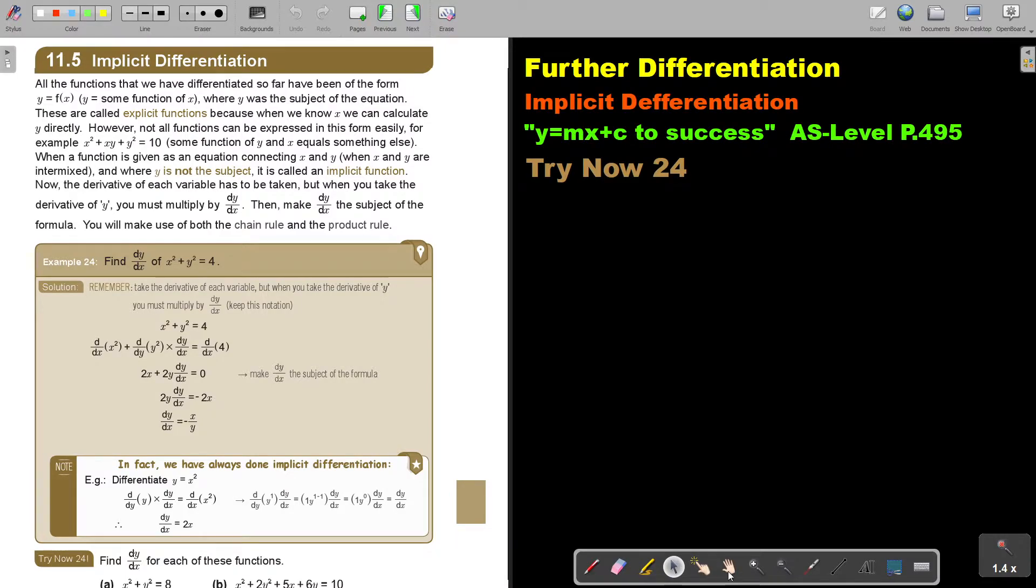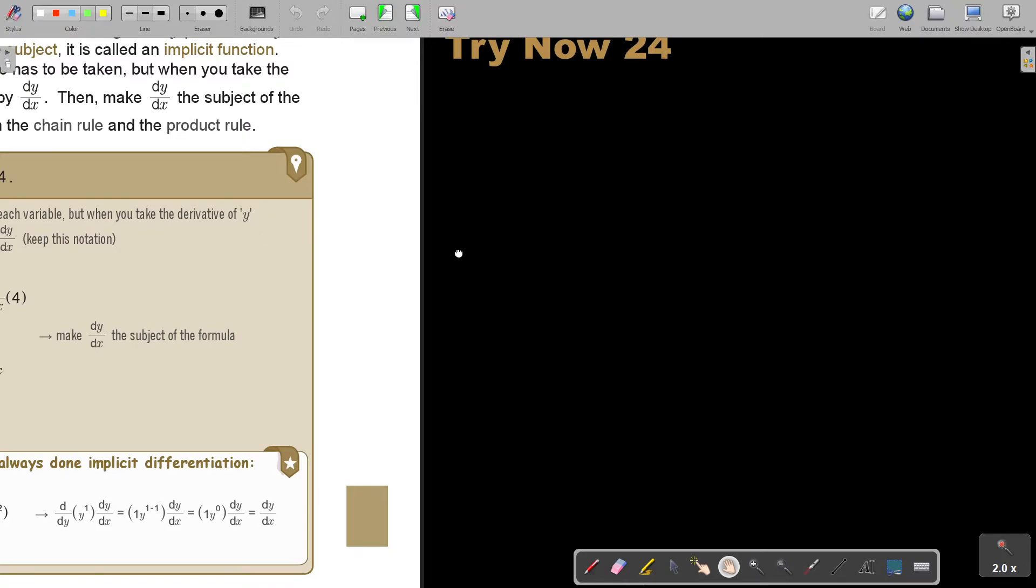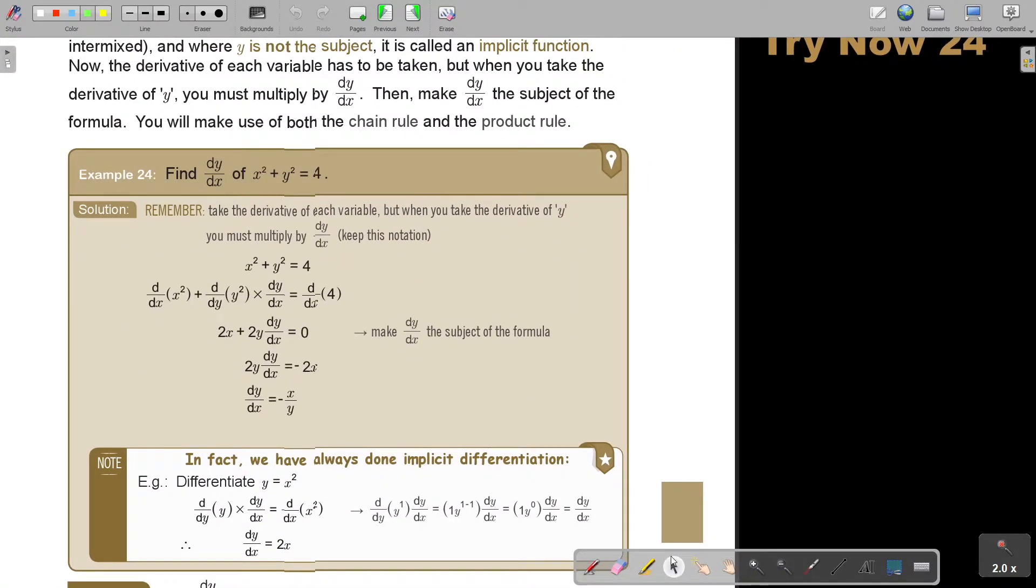Let's start. Let's look at an example. Find dy over dx of x squared plus y squared equals 4. Can you see? It's mixed. So remember, take the derivative of each variable. But when you take the derivative of y, you must multiply by dy over dx. So this is in terms of x.